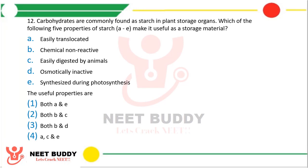Question 12: Carbohydrates are commonly found as starch in plant storage organs. Which of the following properties of starch — A: easily translocated, B: chemically non-reactive, C: easily digested by animals, D: osmotically inactive, E: synthesized during photosynthesis — make it useful as a storage material? Options: both A and E, both B and C, both B and D, or A, C and E. The correct answer is option 3, both B and D — starch is chemically non-reactive and osmotically inactive.